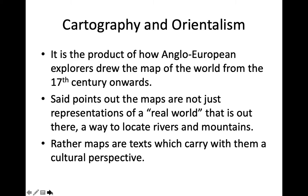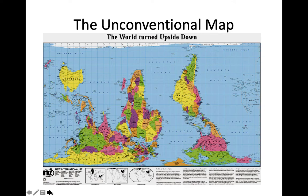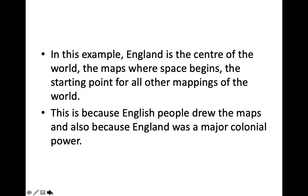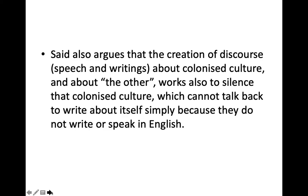Cartography and Orientalism. It is a product of how Anglo-European explorers drew the map of the world from the 17th century onwards. Said points out that maps are not just representations of the real world — a way to locate rivers and mountains. Rather, maps are texts which carry with them a cultural perspective. You can see this unconventional map shown here — I will elaborate on this in our class. In this example, England is the center of the world, the starting point for all other mappings of the world, because English people drew the maps and England was a major colonial power.